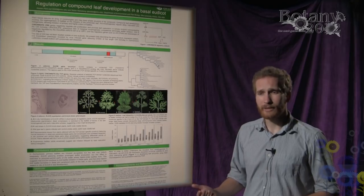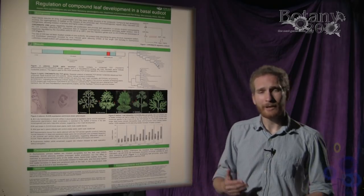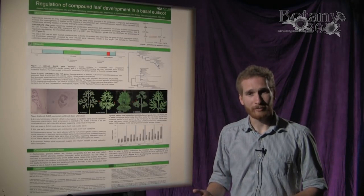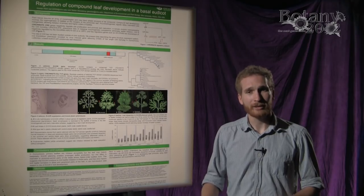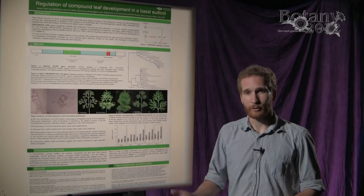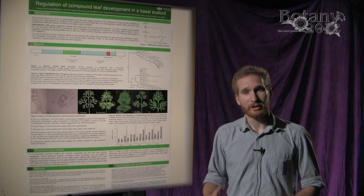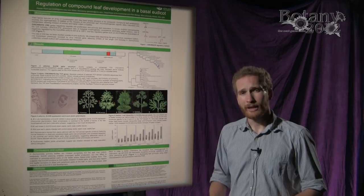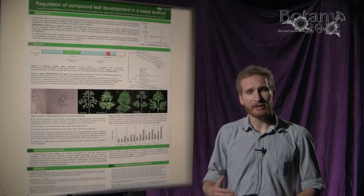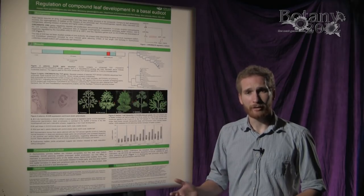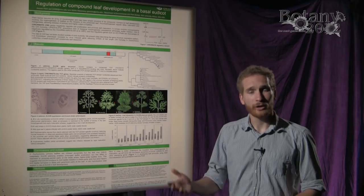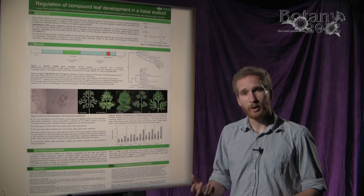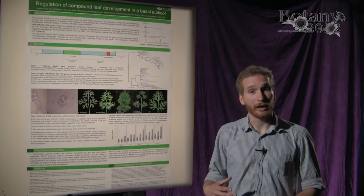We see in plants a great variety of morphologies and developmental processes to reach those morphologies. What I am interested in doing is comparing a basal eudicot species, both to more basal and to the core eudicot species, such as the models Arabidopsis and Antirrhinum.